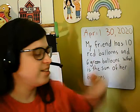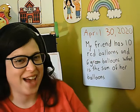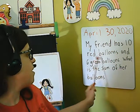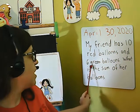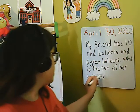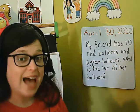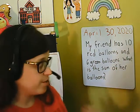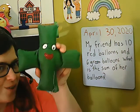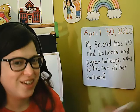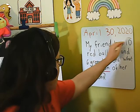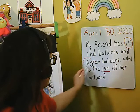Now let's look at our story problem for today. It says: my friend has 10 red balloons and 6 green balloons. What is the sum of her balloons? It is asking what the sum of her balloons are — that is a plus word. If you see "sum," it is telling you that you need to add. We need to add these two numbers, 10 and 6.